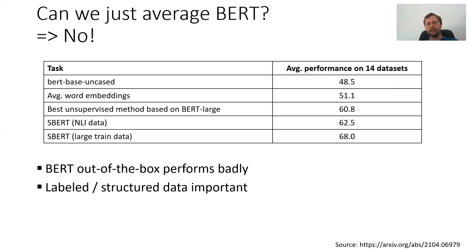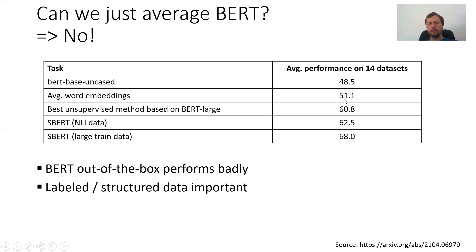The first idea is: can we do this also with contextualized word embeddings? For example, with the contextualized word embeddings we get from BERT. The simple answer is no. If we simply average contextualized word embeddings from BERT and compare to averaging word embeddings from Word2Vec, we see that it's actually performing worse.